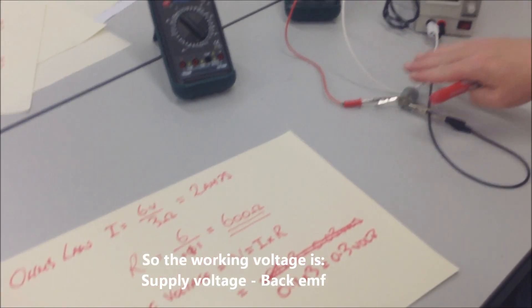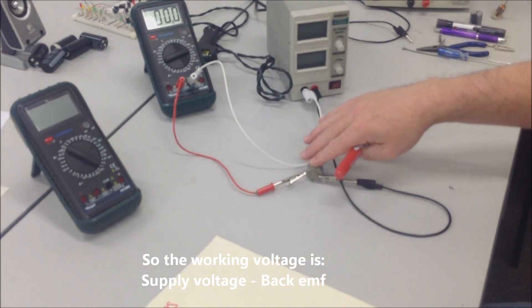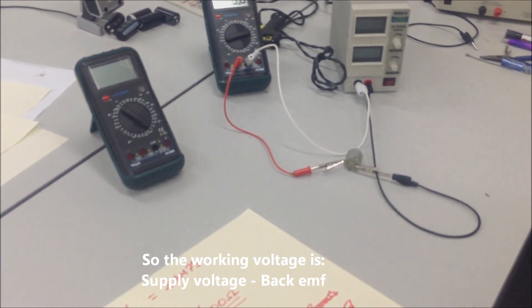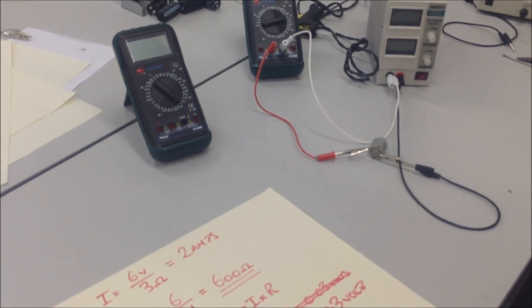That's because the motor, whilst acting as a motor, is also a generator and it's generating 5.7 volts in opposition. That's what back EMF is.